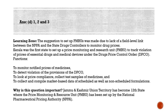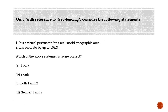We'll now move to the last question for the day. With reference to geofencing, consider the following statements. Statement 1: it is a virtual perimeter for a real-world geographic area. Statement 2: it is activated up to 10 kilometers. Which of the above statements is/are correct? Option A: one only. Option B: two only. Option C: both one and two. Option D: neither one nor two.